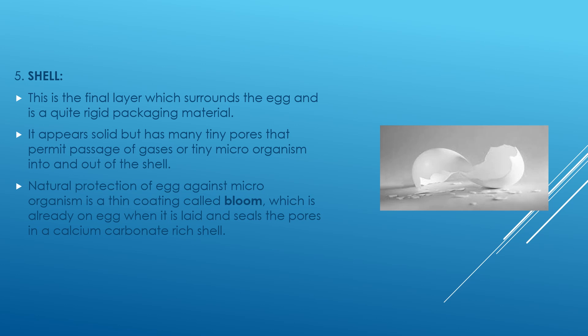The final layer is the shell, which surrounds the egg and is a quite rigid packaging material. It appears solid but has many tiny pores that permit passage of gases or tiny microorganisms into and out of the egg. The natural protection of an egg against microorganisms is a thin coating called bloom, which is already on the egg when it is laid and seals the pores in the calcium carbonate-rich shell. That is why it is suggested not to wash eggs thoroughly or with soap, because contaminated water can get inside the egg through these tiny pores.